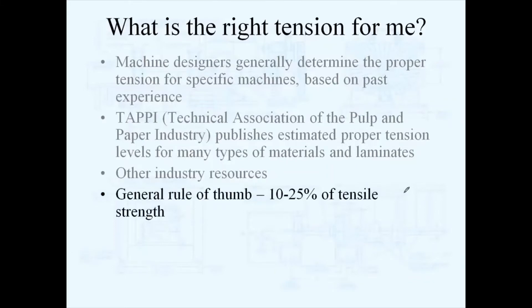Another general rule of thumb is a lot of people know the tensile strength of their material but don't know what the tension is. Proper unwinding and rewinding tension is between 10% to 25% of tensile strength.